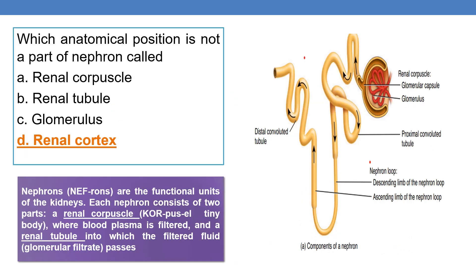Next question: which anatomical position is not a part of the nephron? Here you can see the complete diagrammatic representation of the components of the nephron. Each nephron consists of two parts: a renal corpuscle — made up of the glomerulus and glomerular capsule — and a renal tubule. So renal corpuscle, renal tubule, and glomerulus are all parts of the nephron.